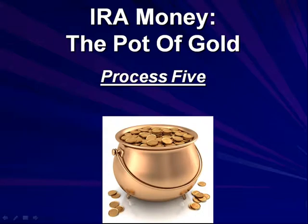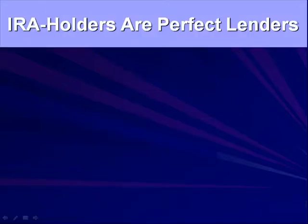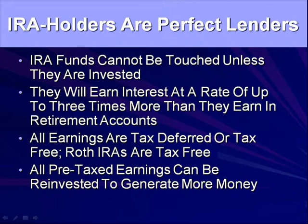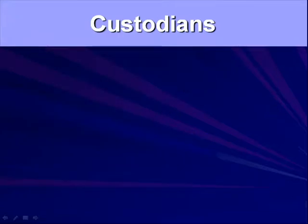Process number five: the pot of gold — IRA money. These are perfect lenders for us. IRA funds cannot be touched unless they are invested, and they will earn interest at a rate of up to three times more than they earn in typical retirement accounts. What does a bank CD pay on an IRA? Next to nothing. You can pay three, four, five times what people are receiving on other investments. All earnings are either tax-deferred or tax-free, and pre-tax earnings can be reinvested to generate more money — so each time they get money back from you, they have more to loan because they're getting a higher rate of return.